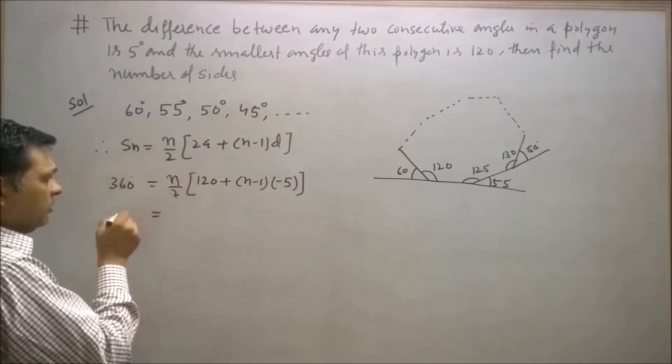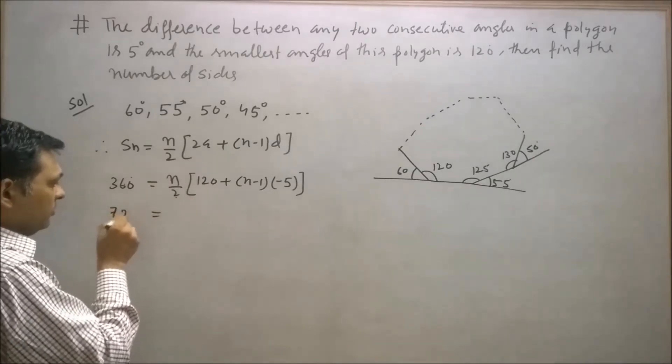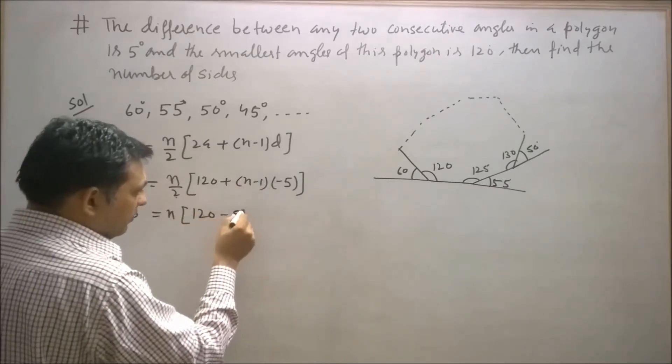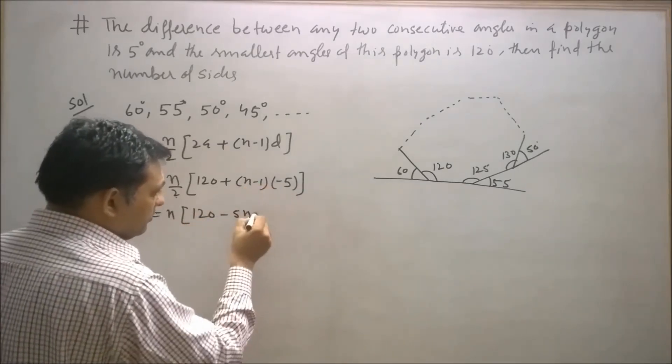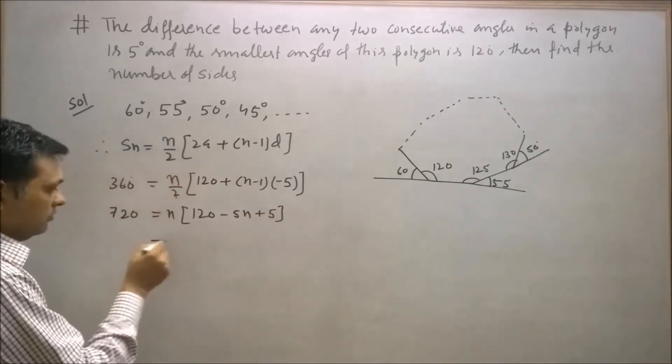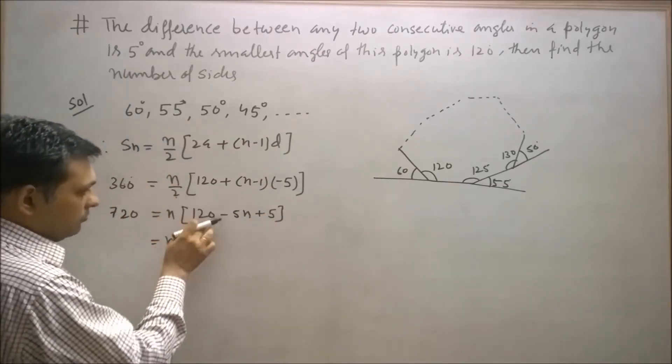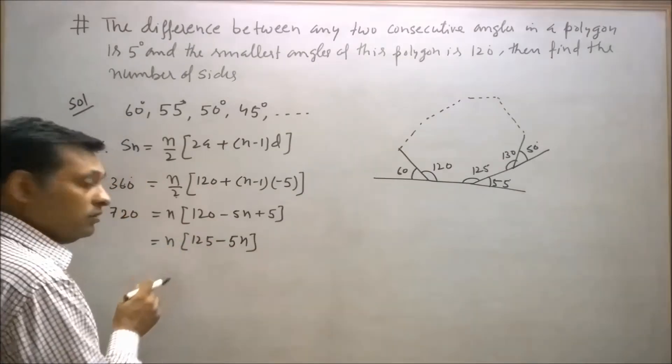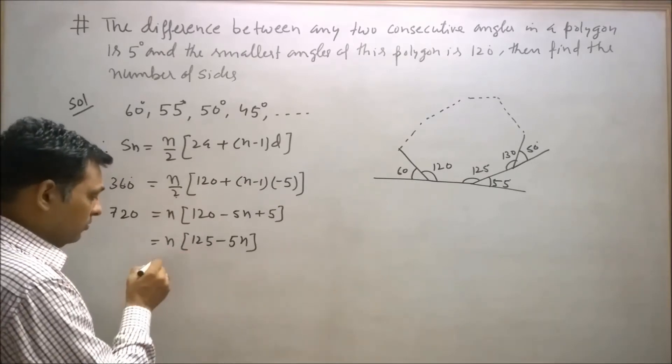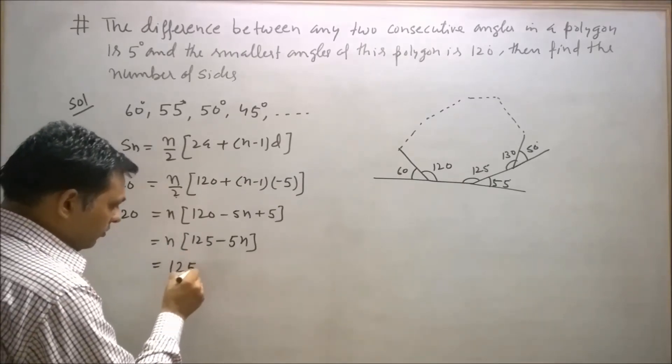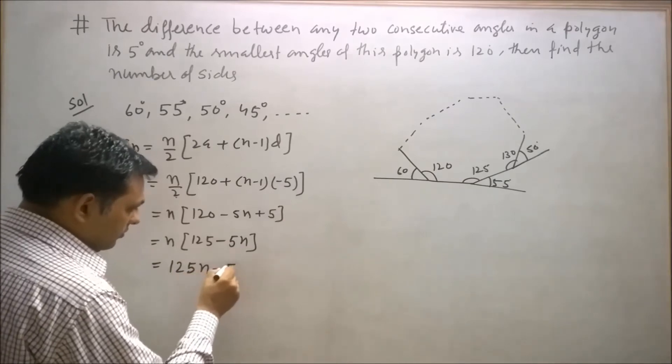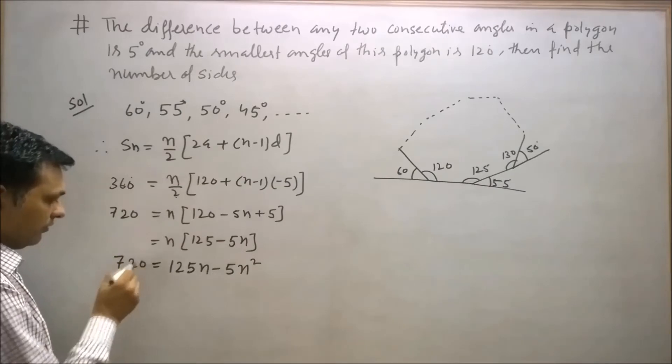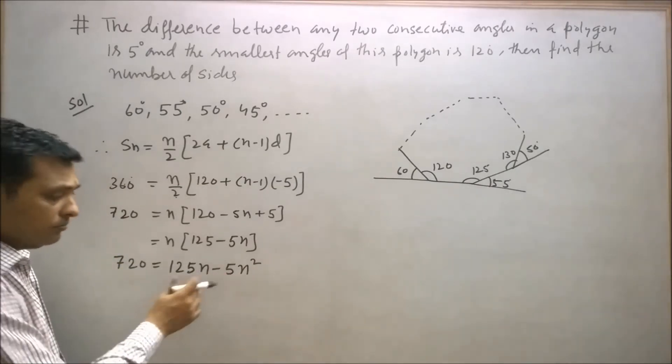Now cross multiply: n × 360 divided by 2 gives 720 = n[120 + (n-1)(-5)]. This becomes 720 = n[120 - 5n + 5] = n[125 - 5n]. Now reduce both sides by 5.